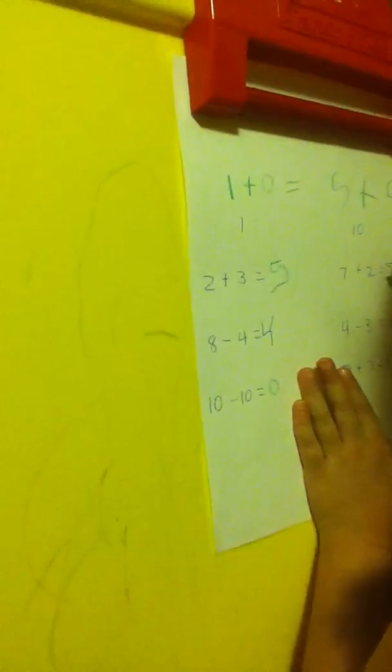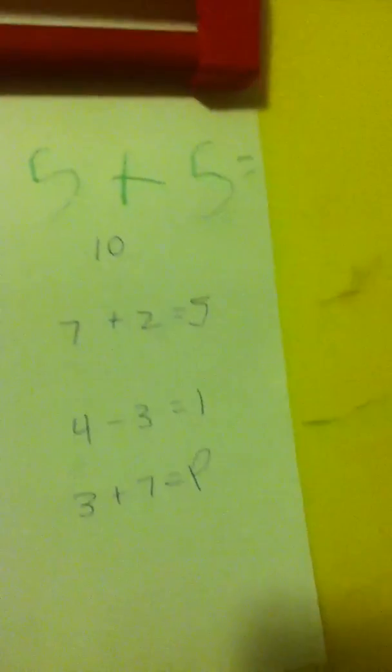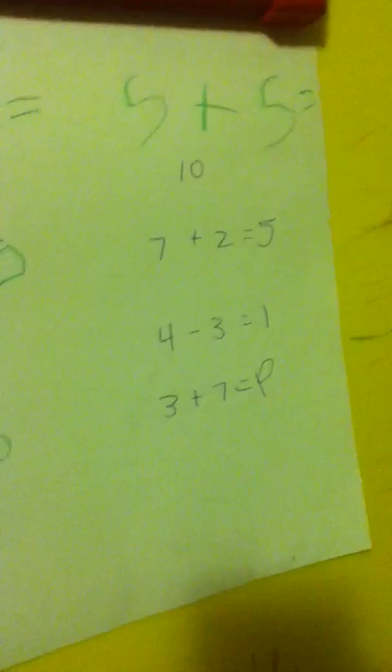Seven. I know. Now it's close. You did seven minus two is five. You need seven plus two. What's seven plus two?